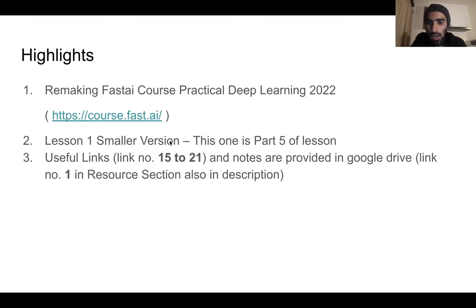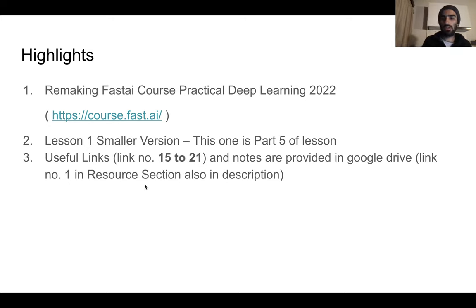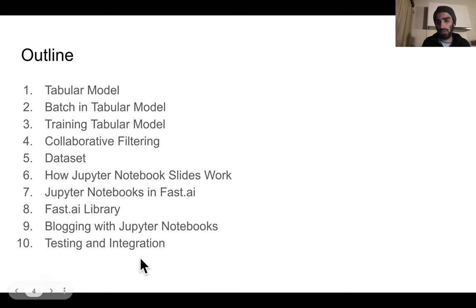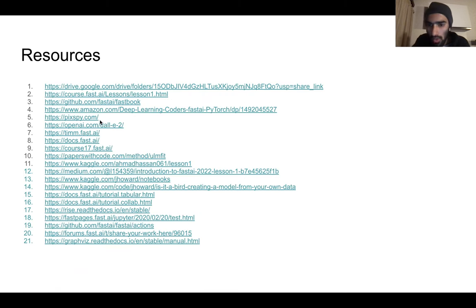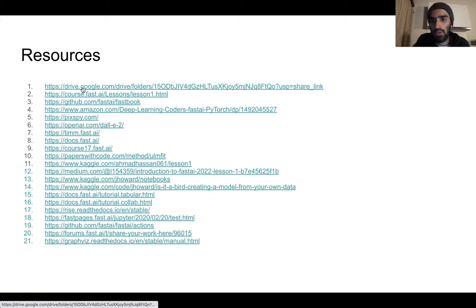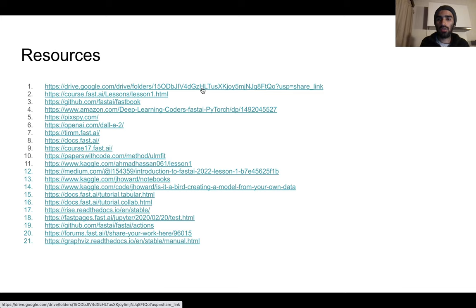These are the following highlights. I would suggest everyone to go to the resource section and find links number 15 to 21. We are remaking the fast.ai course 'Practical Deep Learning 2022,' and notes are provided in a Google Drive link number one in the resource section. You can also see the description of this video, which contains the resource section as well. Thank you, and let's go to lesson number one, part five.